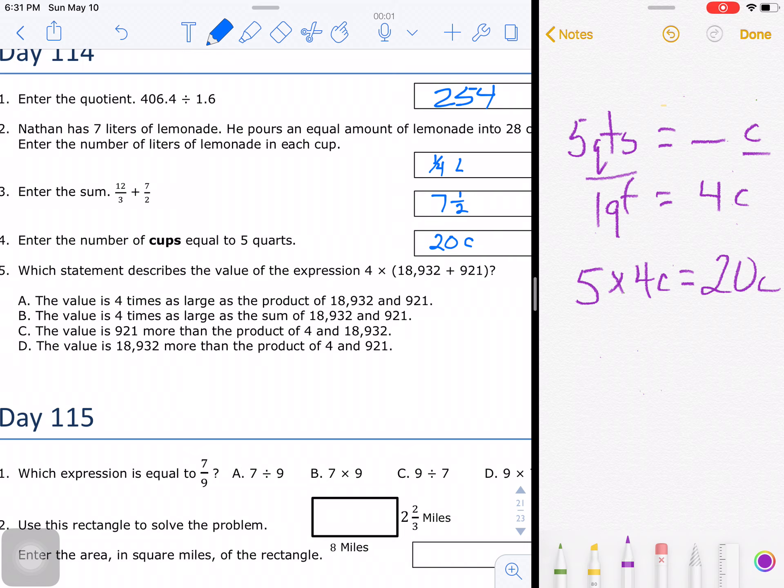Which statement describes the value of the expression? When we look at that expression, what we see is this is a multiplication problem. You have something times something. So even though we see that there's an addition symbol in there, we know that whatever is in parentheses there after we calculate it is going to be the number that we're multiplying 4 by.